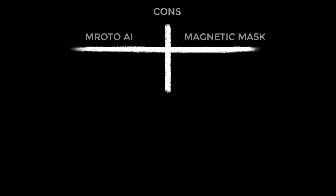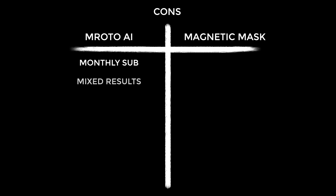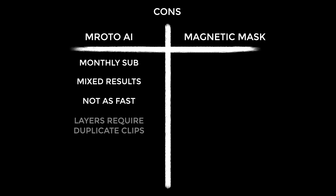Then the cons — starting with M-Roto: of course the big one is that this is a paid monthly subscription, so definitely something to consider. The results can be mixed depending on what you're doing. This kind of plugin struggles with motion blur and it's evident here. It's slightly slower to render compared to Apple's version, though nothing crippling. I have had it once or twice where I've had to leave my computer because when it's rendering you can't really do anything else. If you want to use multiple layers that requires duplicating clips, which will require more processing power. As for the cons of Magic Mask: again mixed results, and subjectively I found the UI less enjoyable and less flexible.